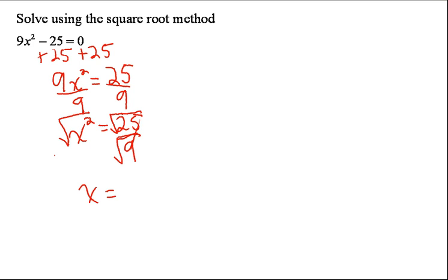So we have x here. We don't want to forget any time we take the square root, we're going to put a plus or minus sign. So the square root of 25 is 5 and the square root of 9 is 3. So that's plus or minus 5 over 3.